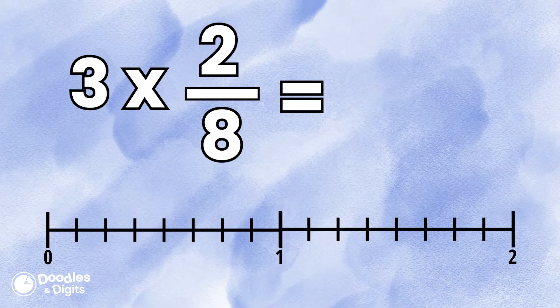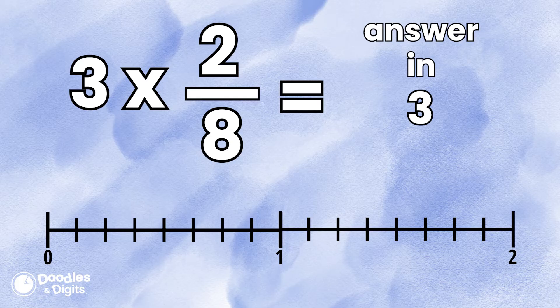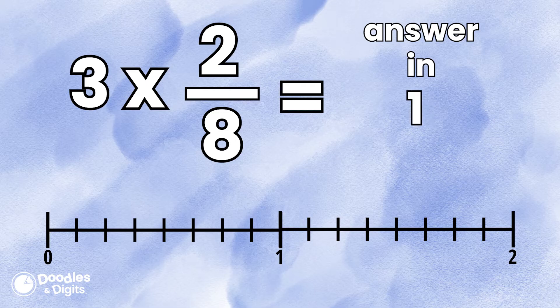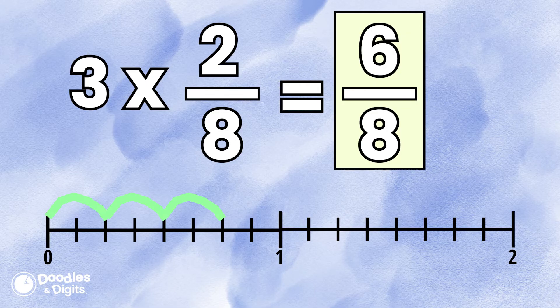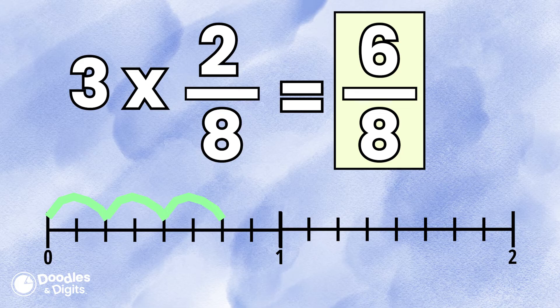Three times 2/8. Three times 2/8 is 6/8. Did you get them correct?